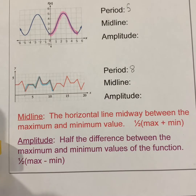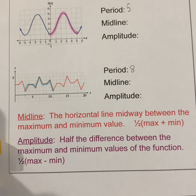There are two other properties of periodic functions we're going to discuss. One is called the midline — the horizontal line midway between the maximum and minimum value. You take the maximum value, add it to the minimum value, and divide by two. Your midline will be y equals whatever that number is. The other property is the amplitude — half the difference between the maximum and minimum values. I always think of the amplitude as the height of the function from the midline. The formula is: max minus min, divided by two.